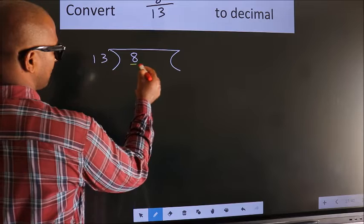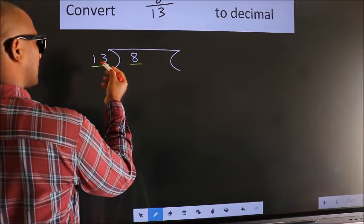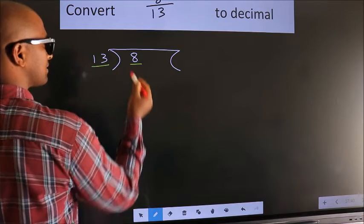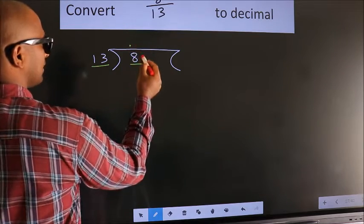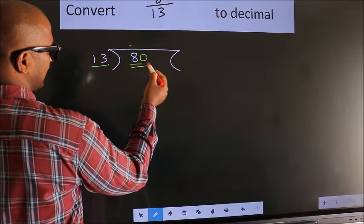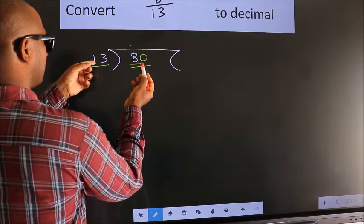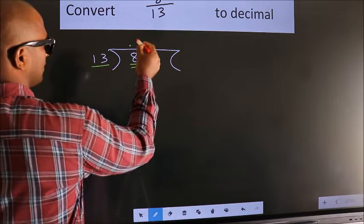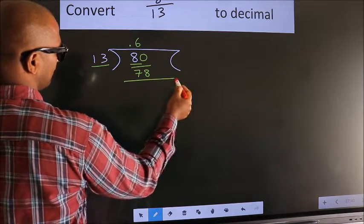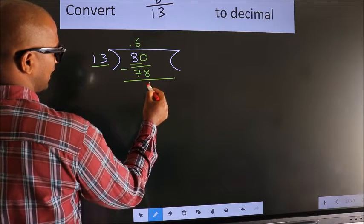Here we have 8, here 13. 8 is smaller than 13. So what we should do is, we should put a dot here and take 0 here. So, 80. A number close to 80 in the 13 table is 13 times 6, which is 78. Now, we subtract. We get 2.